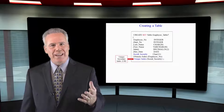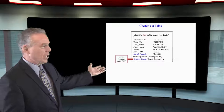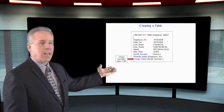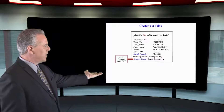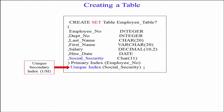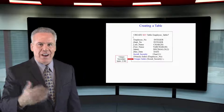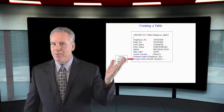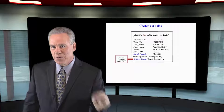Here we have another set table. We just have a primary index on employee, so it is a non-unique primary index. But notice down here the last line in blue — a unique index on Social Security. That's a unique secondary index, and this is another technique on a set table: it will no longer need to do the duplicate row check.